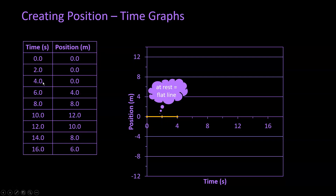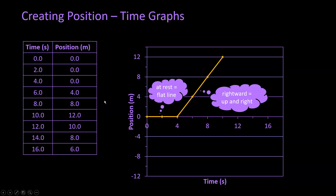Now, beginning at second four, we can see that the object starts to move. And at six seconds, it is at position four meters. We'll go ahead and plot our next few points. And we notice that from four seconds to 10 seconds, the object is moving in the positive direction from zero meters to 12 meters.